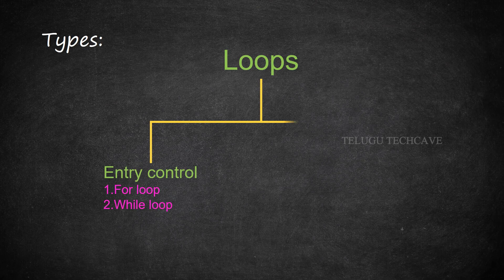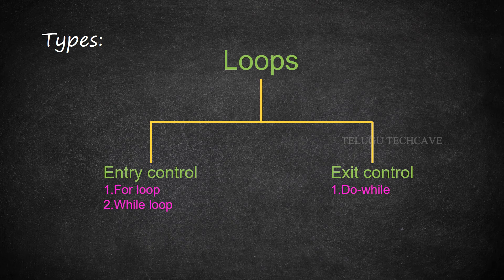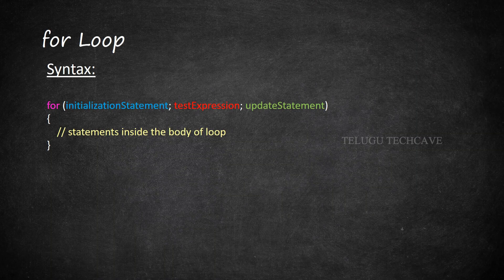In this loop, there are two types of loops: one is entry control loop and exit control loop. In the entry control loops, we have the for loop and while loop. In the exit control loop, we have do-while.